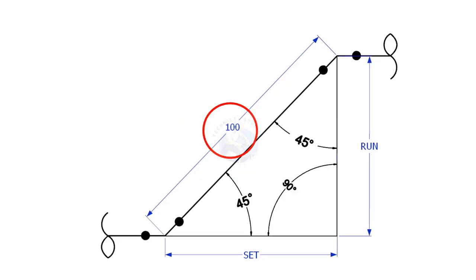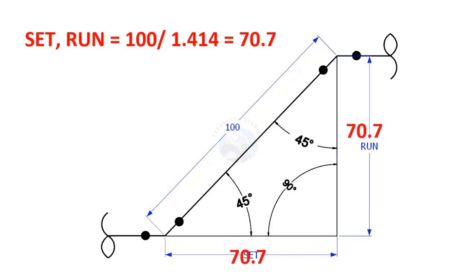Suppose the travel length is 100. How to calculate the set and the run? The travel length is given and the angle is 45. The formula to calculate the set or run is divide the travel length by 1.414. Let us calculate. Divide 100 by 1.414. So the set and run length is 70.7.